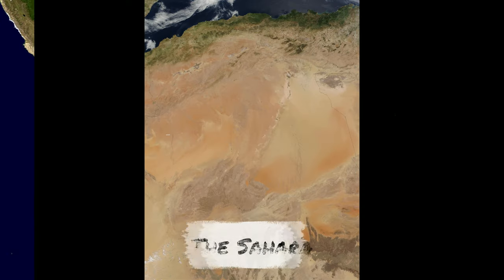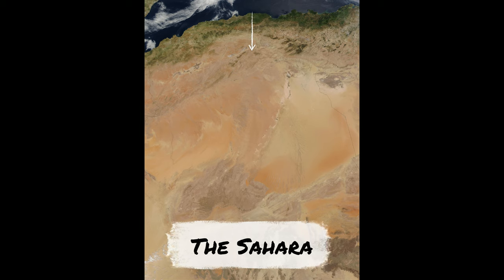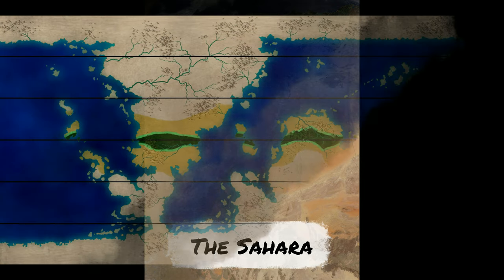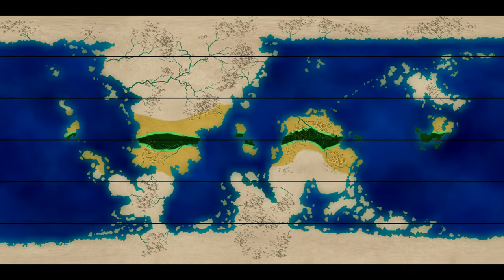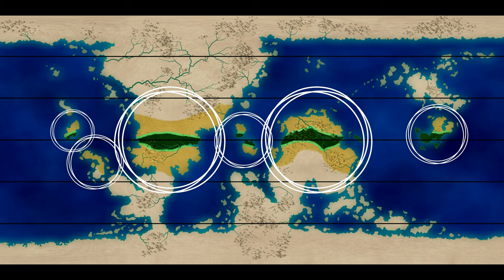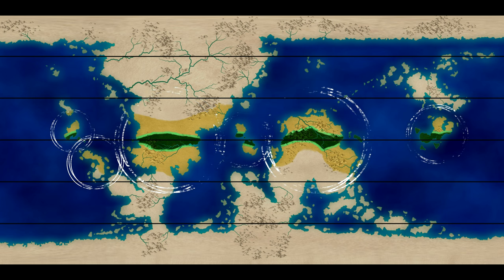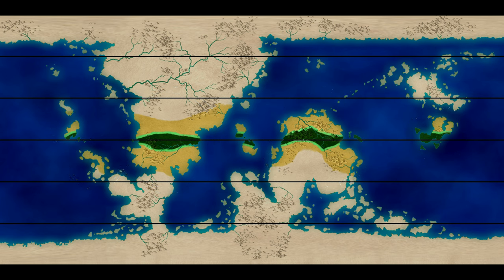Hot deserts can also form in more equatorial areas if the area is affected by a mountain's rain shadow. This is the map of Locus, which is the Earth-like world we're creating across this series. As you can see, we've already placed the tropical climate zones on the map.